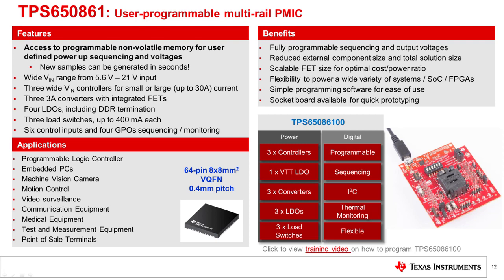Programming the OTP directly allows access to more parameters of the TPS-650861, making this solution incredibly flexible. For example, the buck controllers can be sized accordingly depending on the load requirements, from 5 amps up to 30 amps depending on the external FETs used. The six control inputs and four general purpose outputs further increase the flexibility of this solution.